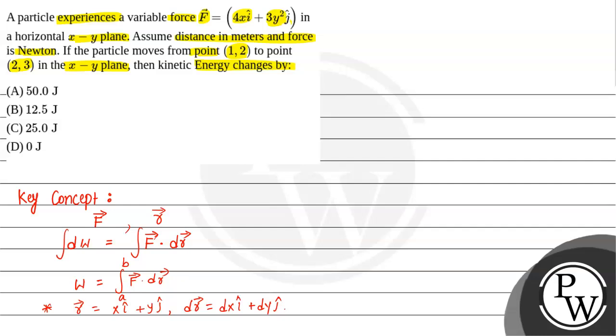Now we will write the solution part. Force vector is given to us as 4x i-cap plus 3y² j-cap and the particle moves from point P1 which has coordinate (1,2) to P2 which has coordinate (2,3).